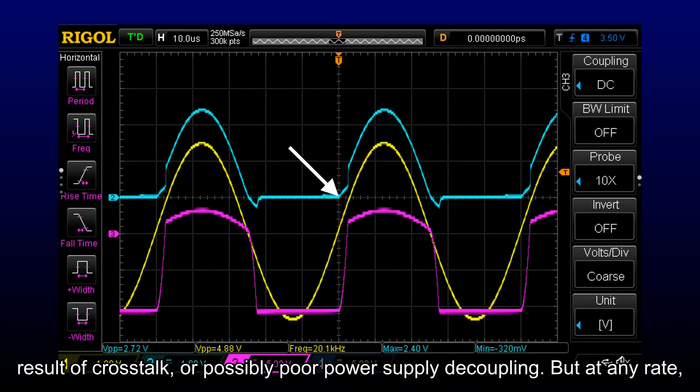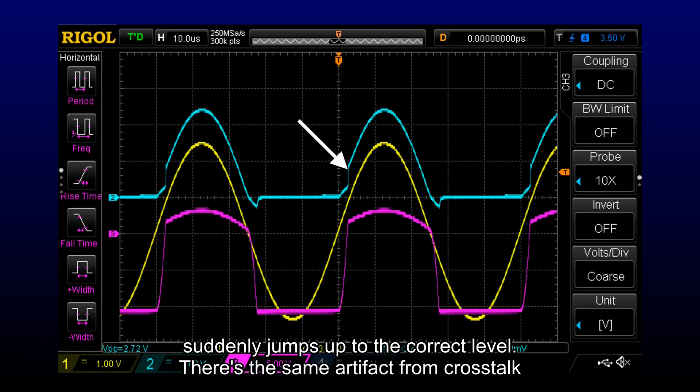There were horrible glitches at the zero crossings of the input signal. To understand what's going on, I hooked a third scope probe up to the op-amp output at the anode of the diode. It's the purple trace on the screen. And it's not too hard to see the major problem, which happens when the input wave crosses the axis in the positive direction. The output starts up a little bit. I think this is the result of crosstalk, or possibly poor power supply decoupling. But at any rate, the output signal is below the level it ought to be, until it suddenly jumps up to the correct level.